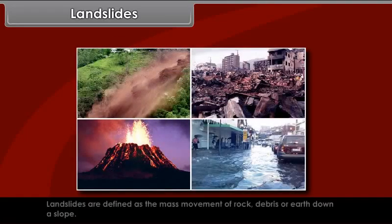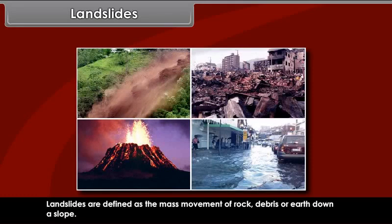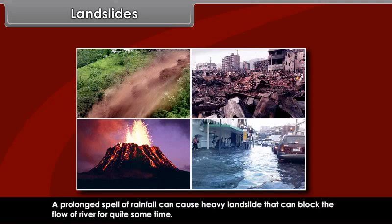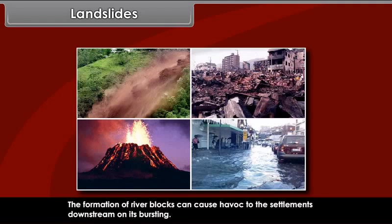Landslides. Landslides are defined as the mass movement of rock, debris, or earth down a slope. They often take place in conjunction with earthquakes, floods, and volcanoes. A prolonged spell of rainfall can cause heavy landslides that can block the flow of a river for quite some time. The formation of river blocks can cause havoc to the settlements downstream on its bursting.